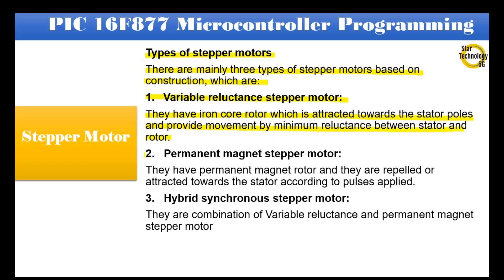Second, permanent magnet stepper motor: they have a permanent magnet rotor and they are repelled or attracted towards the stator according to pulses applied. Third, hybrid synchronous stepper motor: they are a combination of variable reluctance and permanent magnet stepper motors.